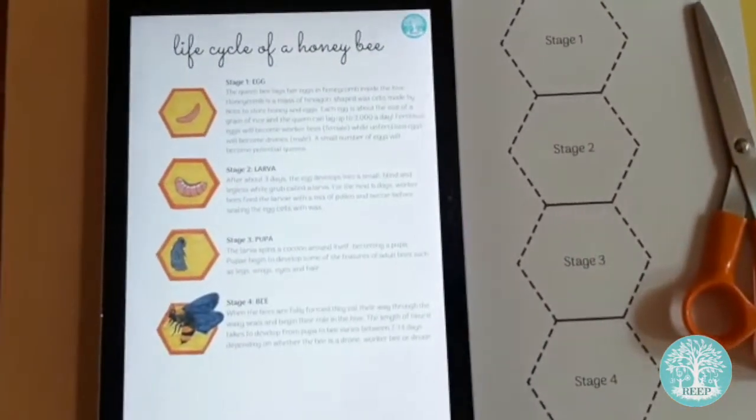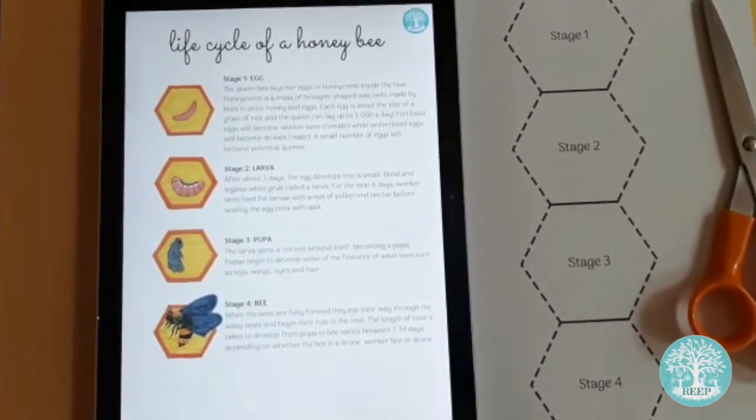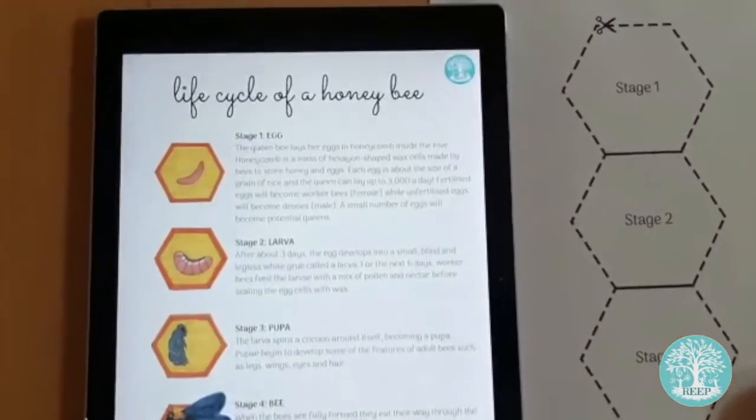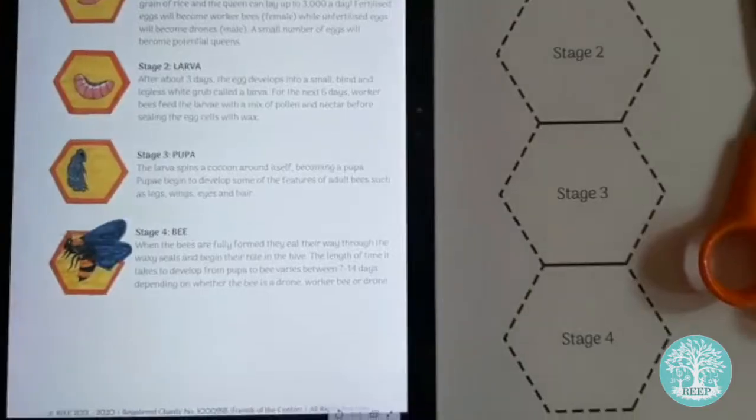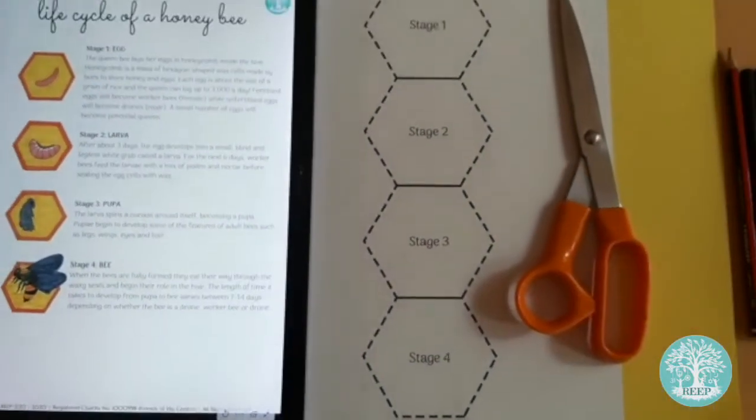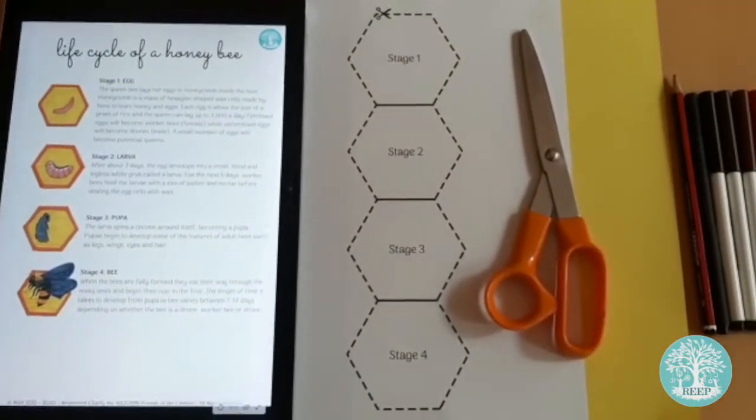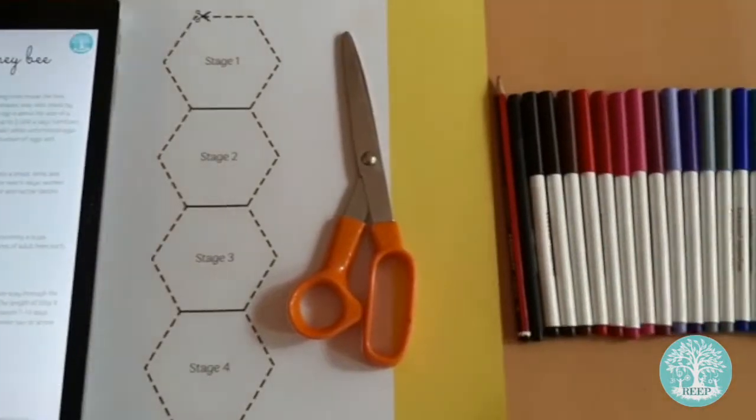For this activity you will need page 2 of the worksheet for you to refer to and also a hard copy of page 3, either printed or copied out. You will also need some yellow card, scissors and some coloured pens or pencils.